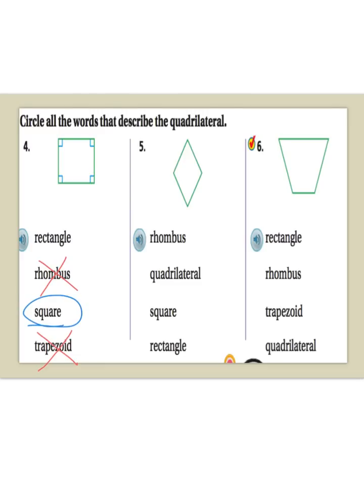For number five, I know it's not a rectangle, because I do not see any right angles. I also know it's not a square. It does have four sides, so it's a quadrilateral. And to me, that kind of looks like a rhombus.